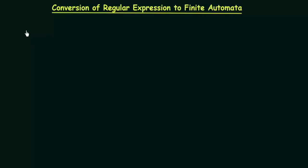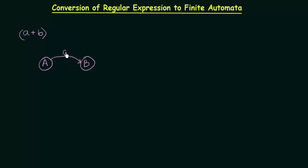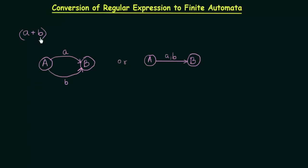We know that in regular expressions we have expressions of many forms. Let's say we have inputs A and B and an expression of the form A plus B — that means A union B. If you have an expression of this form A plus B, how do we draw or design the finite automata for this? We need to have two states. Let me call them state A and state B, and we can say that A will go to the next state B on either input A or input B. This means A union B, that means A or B.